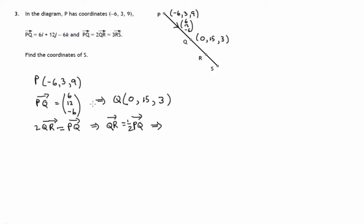So we look at what we did to get from P to Q. It was (6, 12, -6). These were the components, so a half of that would be (3, 6, -3). So there's the instructions for getting further along this line from Q to R.